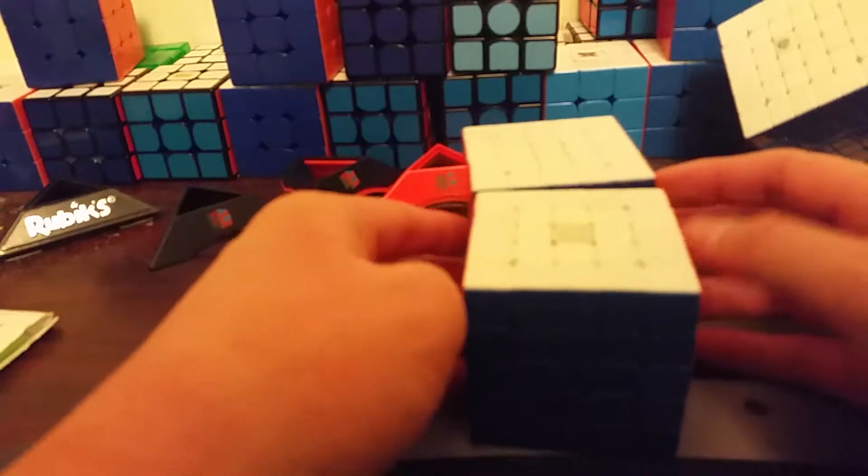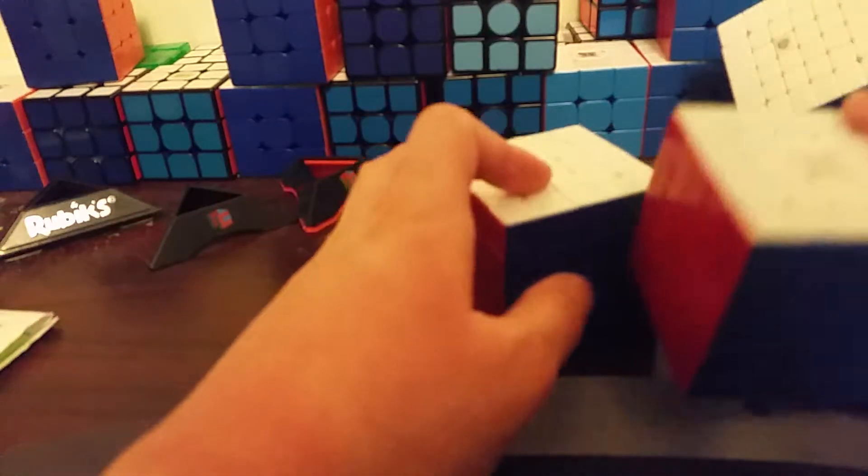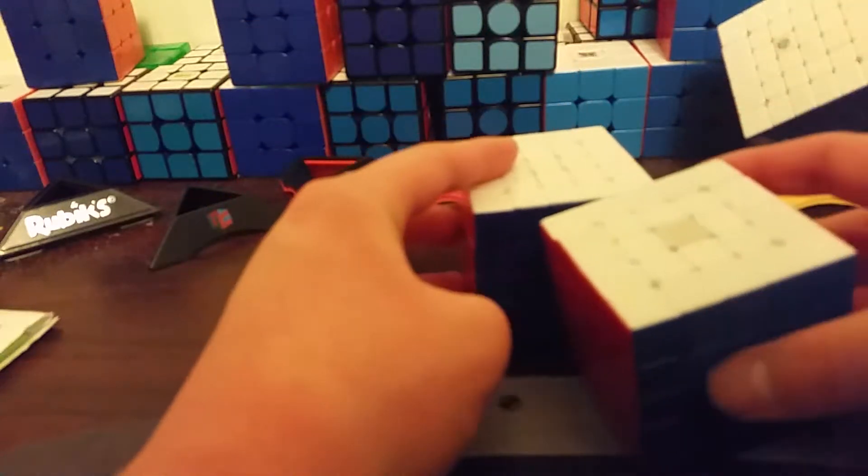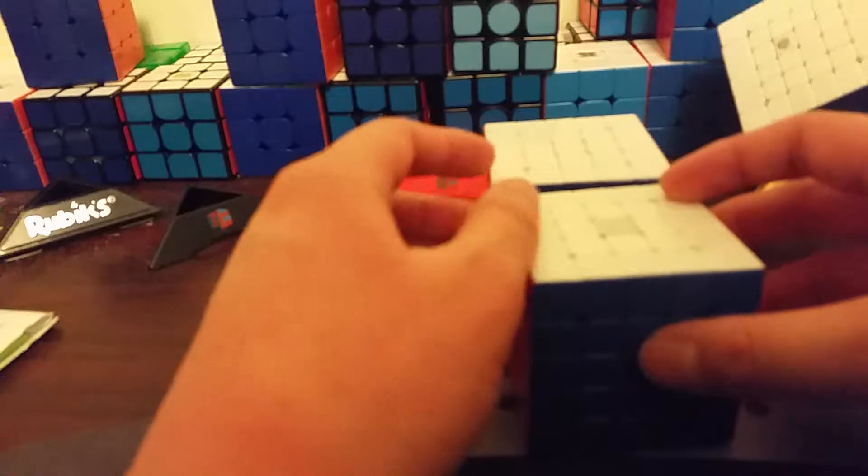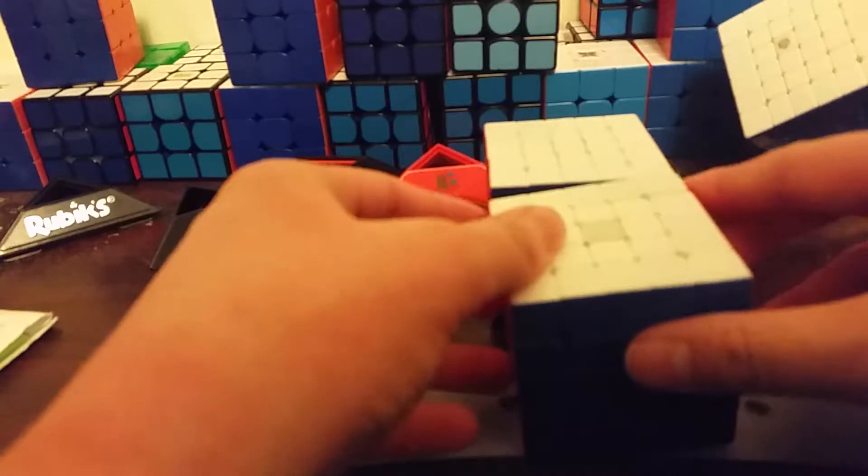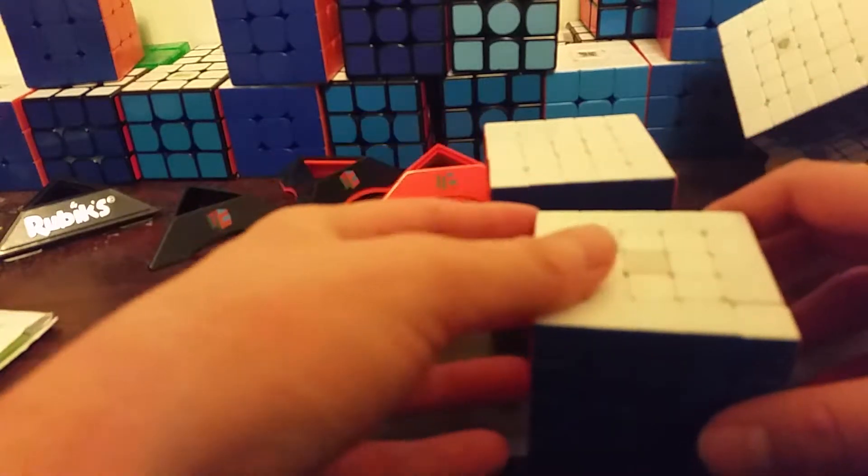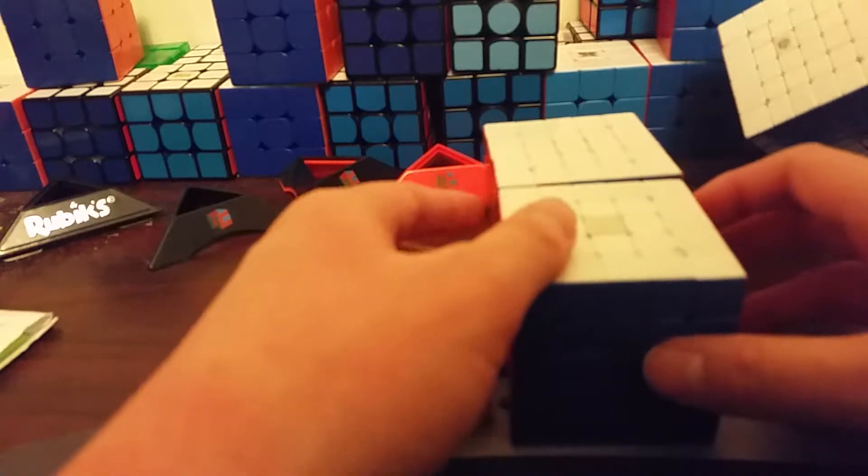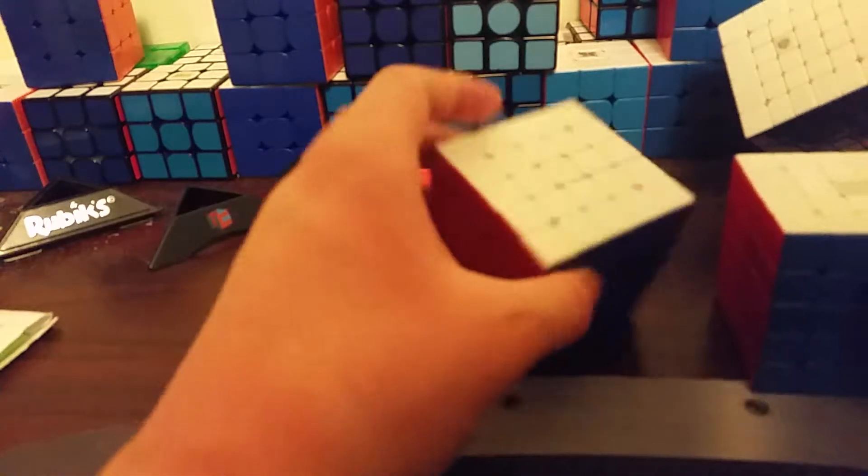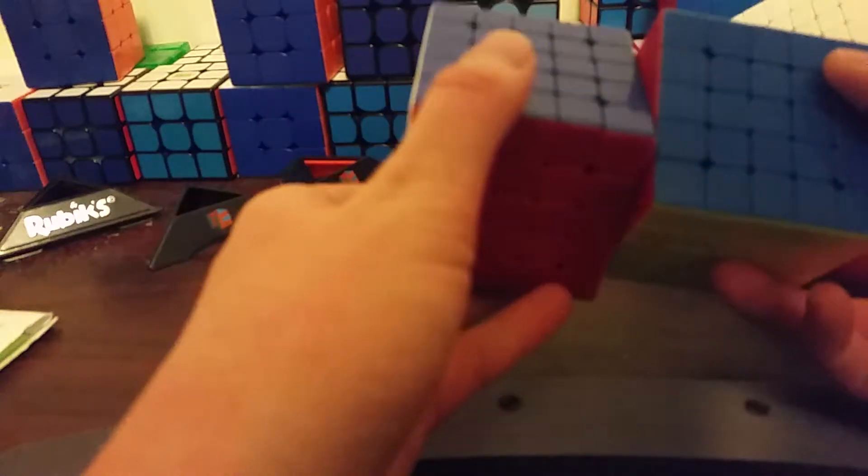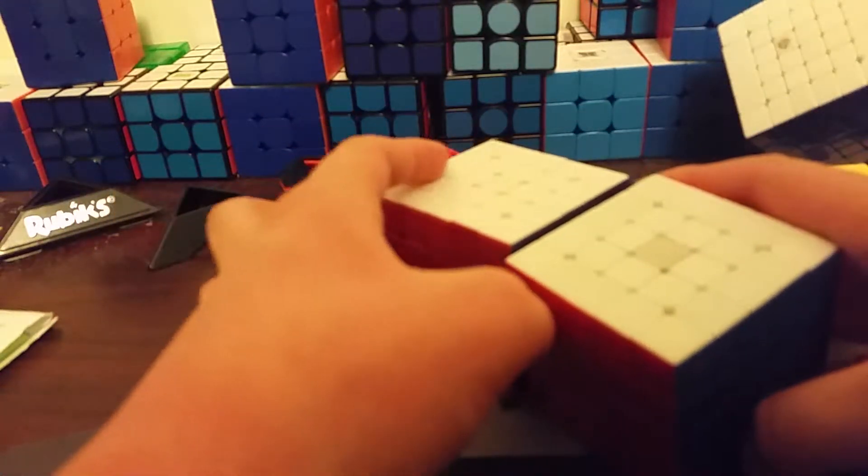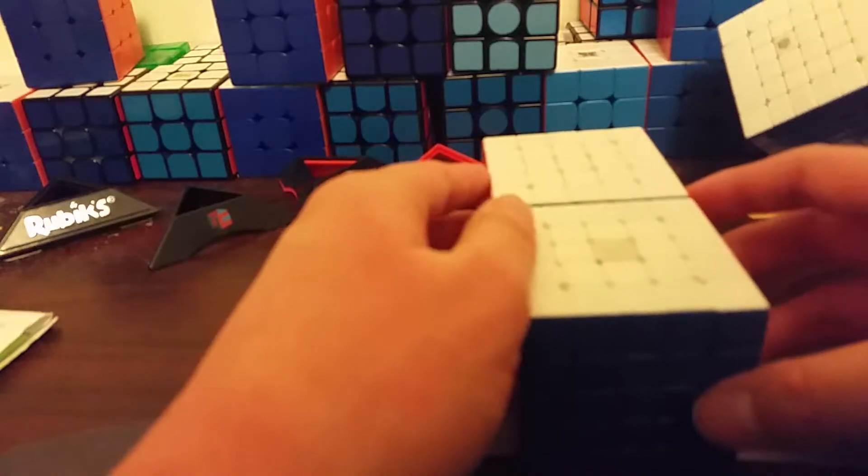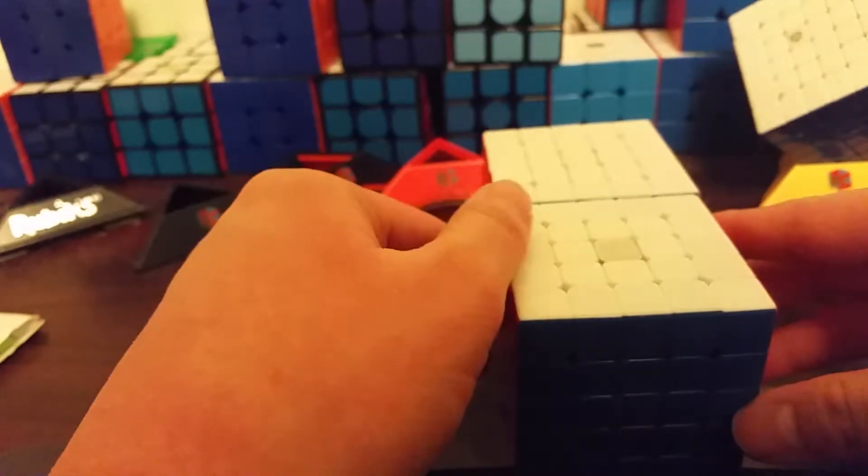For 5x5, I'll be using the Cubicle Wuxuang M as my main, and the Yushin 5x5 as my backup main. My single, I don't really know. I don't even know what my 5x5 average is anymore. I think I'm sub 2 though. I'm hoping for a sub 150 single. And average, maybe sub 2, I guess. Maybe sub 155 if I'm lucky.